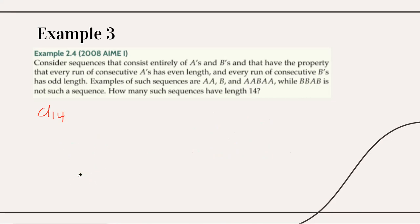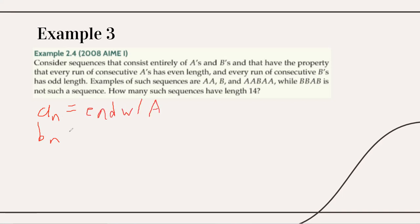Instead, we generate two sequences: a(n) = the number of valid strings of length n that end with 'a', and b(n) = the number of valid strings of length n that end with 'b'. Both must also satisfy the run-length condition.